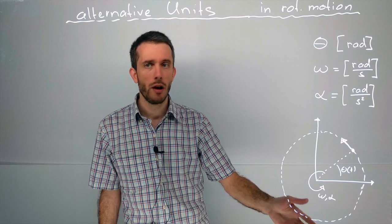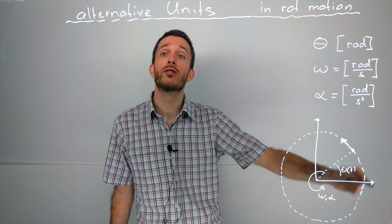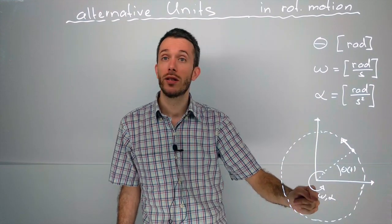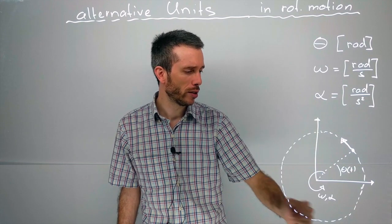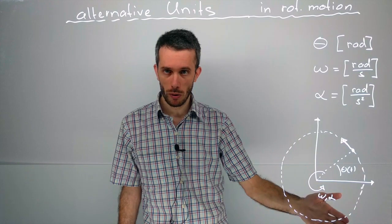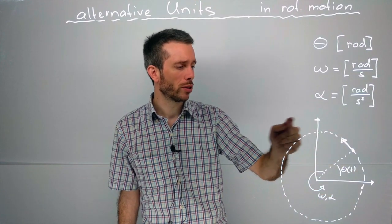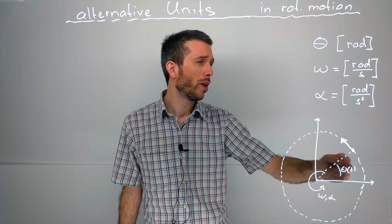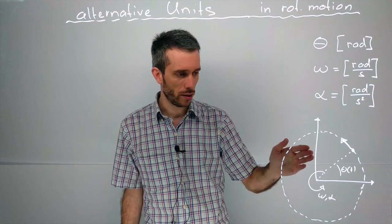We also have the period, which is the time to go around the circle once, which is either the circumference 2πr divided by the linear speed v, or the whole circle 2π in radians divided by the angular velocity.